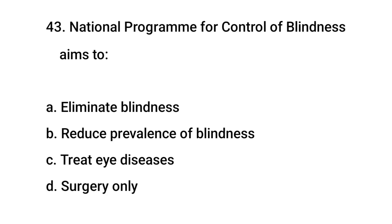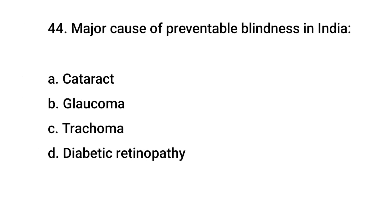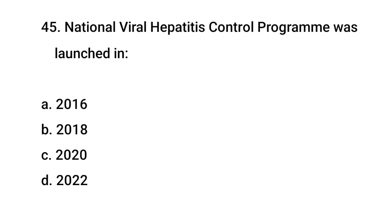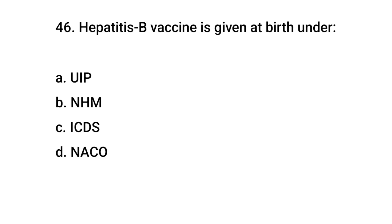Question number 43: National Program for Control of Blindness aims to — the right answer is B: Reduce prevalence of blindness. Question number 44: Major cause of preventable blindness in India — the right answer is A: Cataract. Question number 45: National Viral Hepatitis Control Program was launched in — the right answer is B: 2018. Question number 46: Hepatitis B vaccine is given at birth under — the right answer is D: NACO.